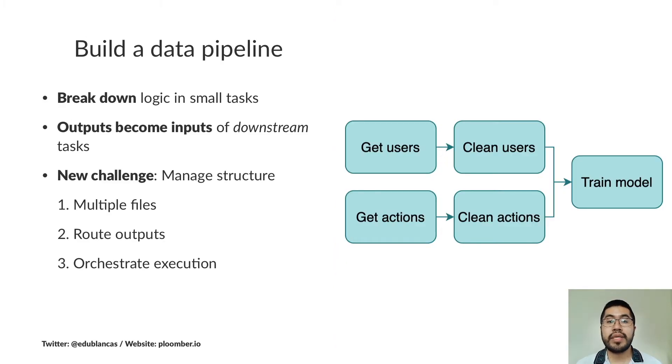How do we build maintainable data projects? We have to build a data pipeline. A data pipeline is just breaking down logic in small tasks where the output of the tasks becomes the input for the next set of tasks. Once we have this structure, we have new challenges because now we have to manage multiple files because potentially every task is a separate file. We also have to route outputs because we have to make sure that outputs become inputs for the appropriate files. And we also have to orchestrate execution because there's a predefined order in our pipeline. We have to make sure that we run dependencies first.